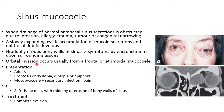Orbital invasion occurs usually from a frontal or ethmoidal mucocele. Coming to the presentation, it usually occurs in adults. The patient can present with proptosis or dystopia, diplopia, or epiphora. This picture shows a case of ethmoidal sinus mucocele presenting with dystopia. A pyomucocele is when there is secondary infection of a mucocele; such cases present with pain.